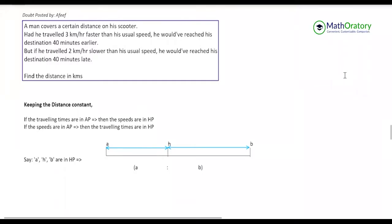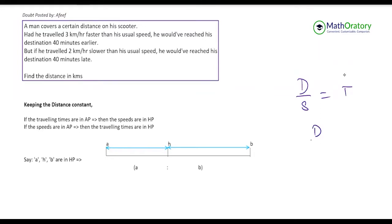This question was posted by Afif and is a simple example of HP series. The basic idea is written below. If you have the distance constant and the traveling times are in AP (arithmetic progression), then the speeds are in HP (harmonic progression), and vice versa — because distance divided by speed is time, and distance divided by time is speed.